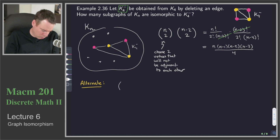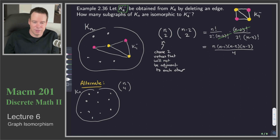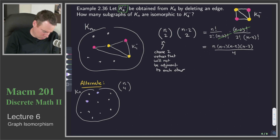What we're going to do is choose from n all four vertices that we're going to use. So I've got my Kn with a bunch of vertices drawn here. I'll put those in a collection and I've just chosen four of them — one, two, three, four.